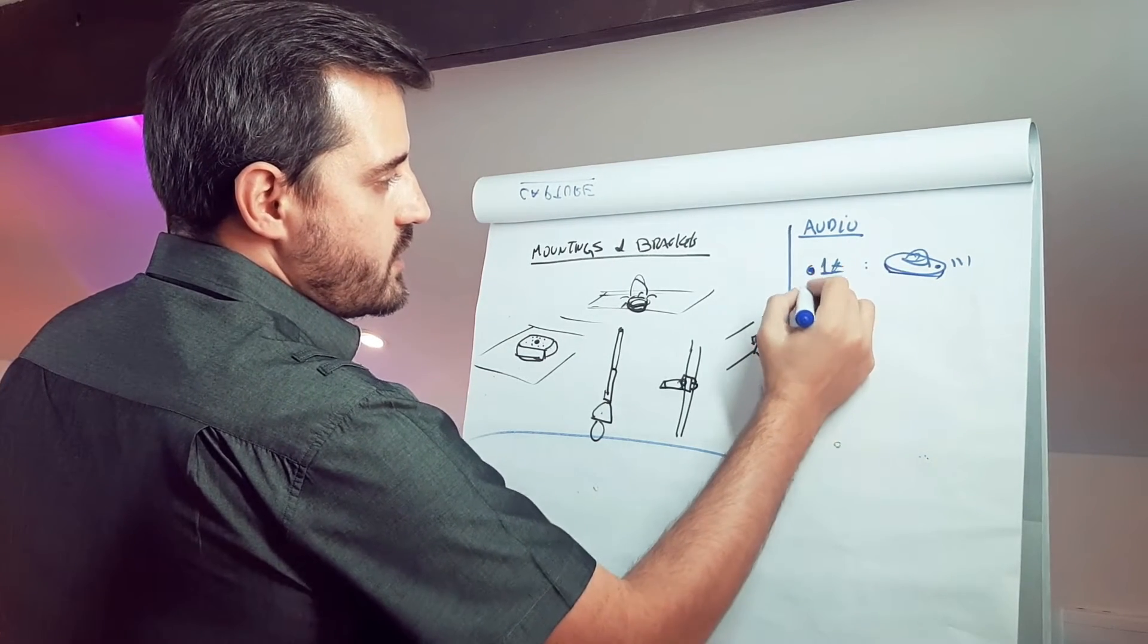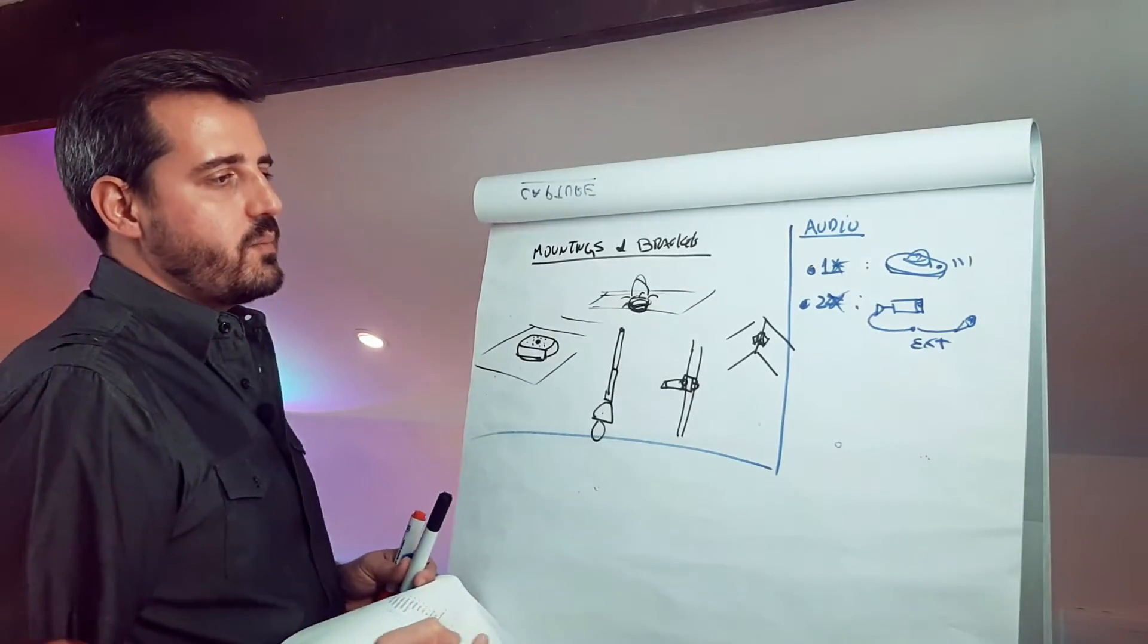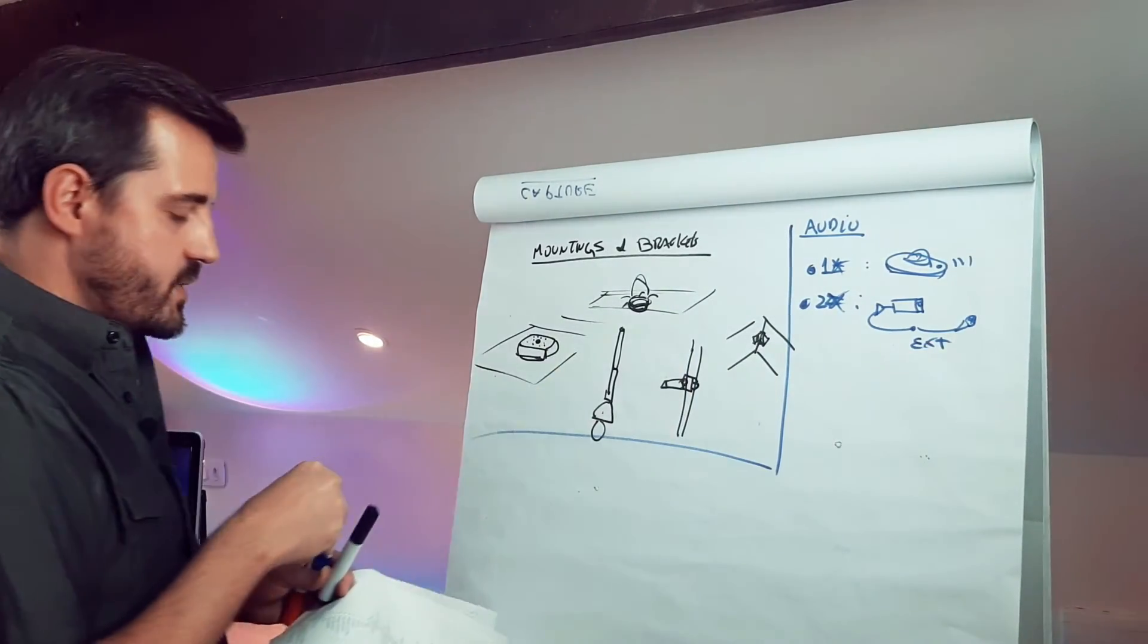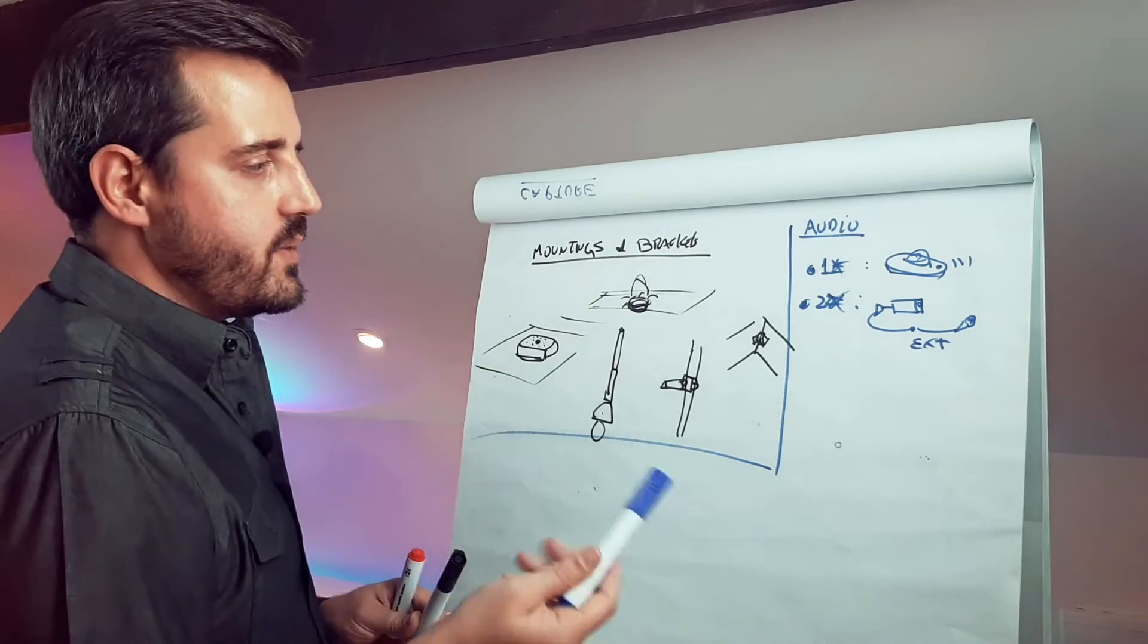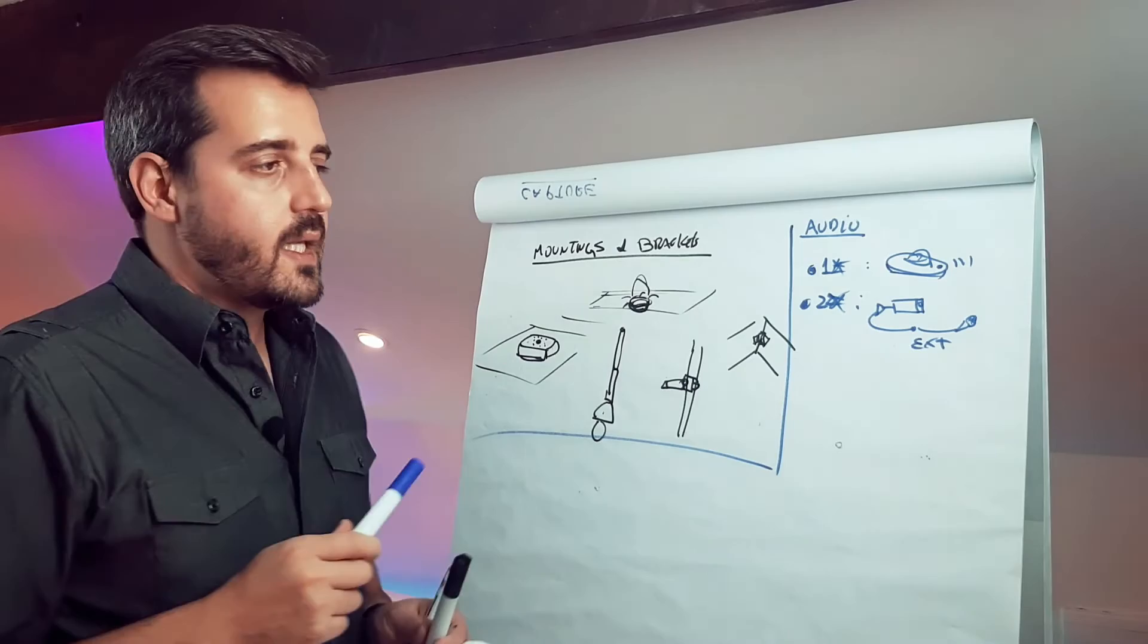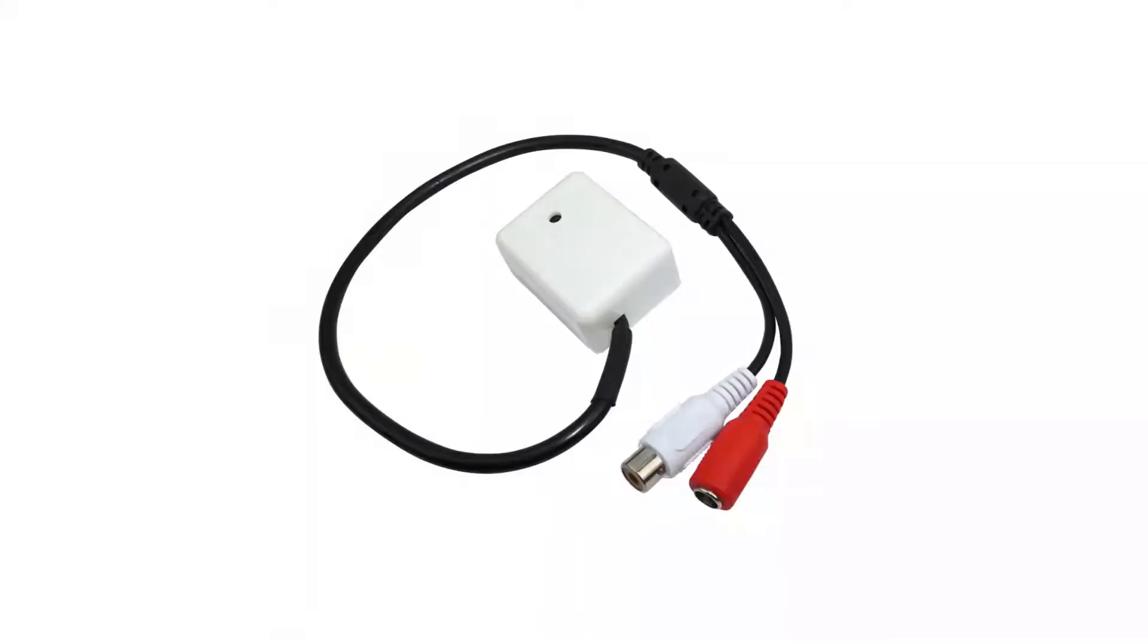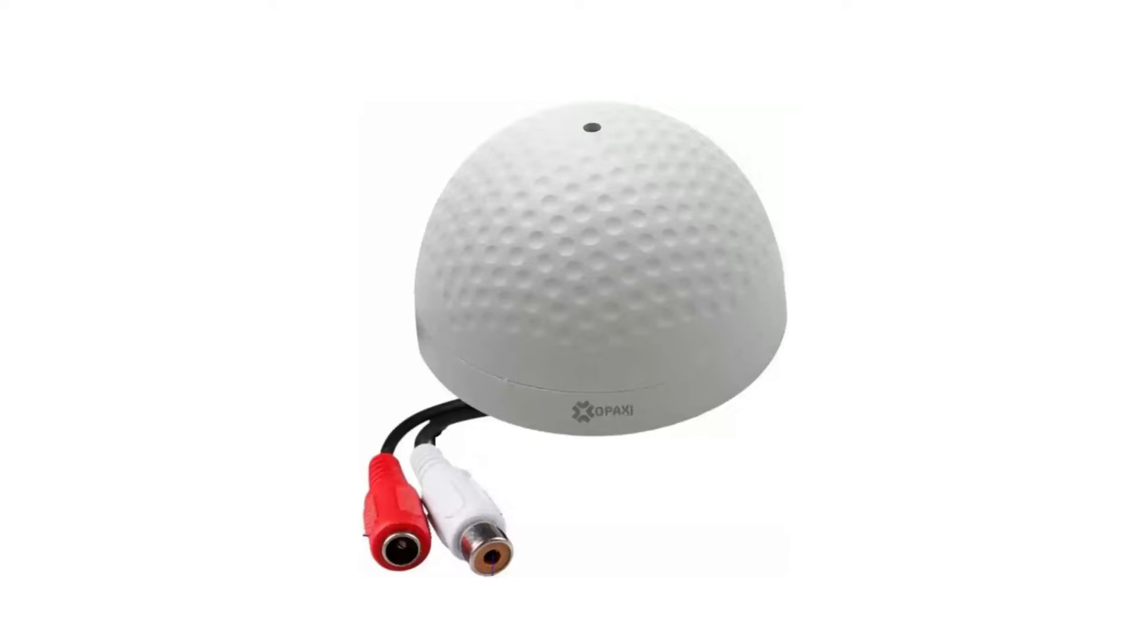The second one is an external microphone. We have a few cameras that have the alarm input and output, but we have the audio input and output as well. In this type of application, we can add external microphones that you can place anywhere in the scene and it will record and stream with the video stream of this camera. So that's very useful.